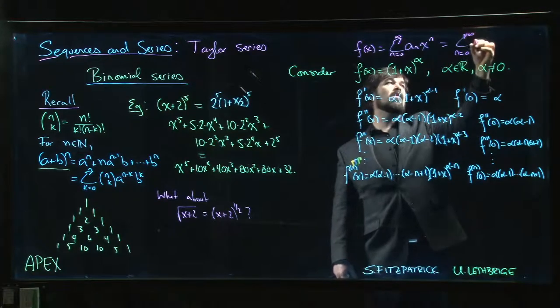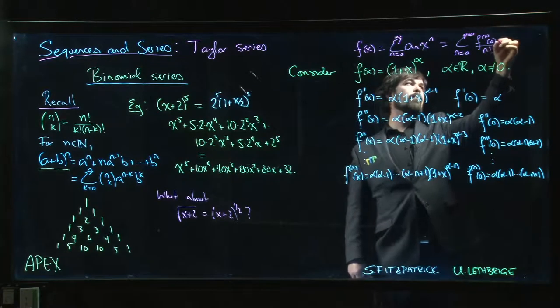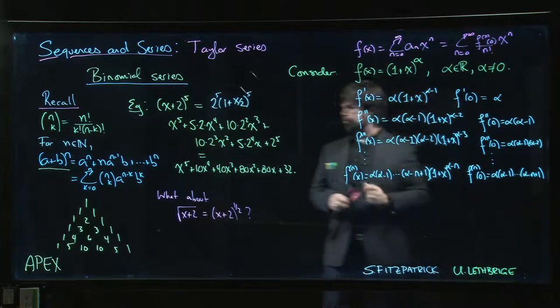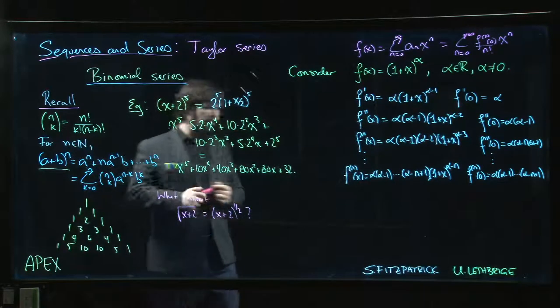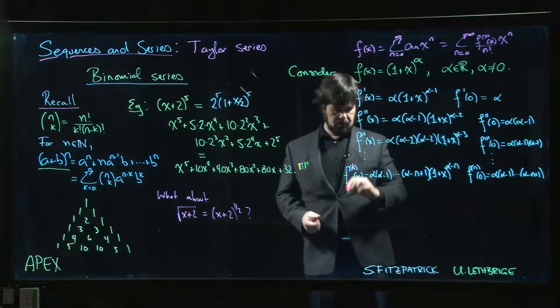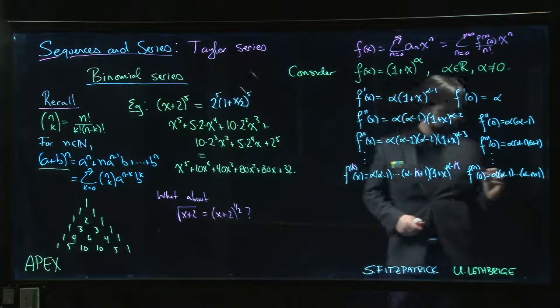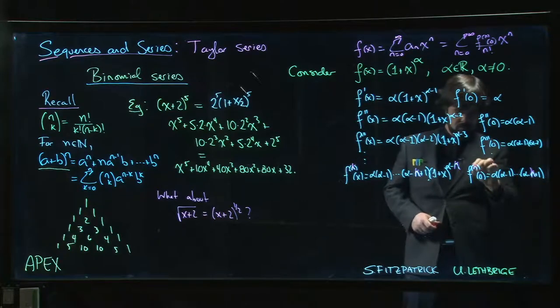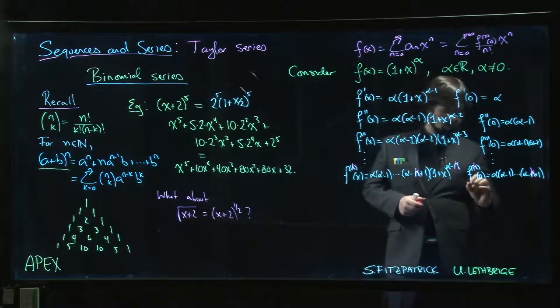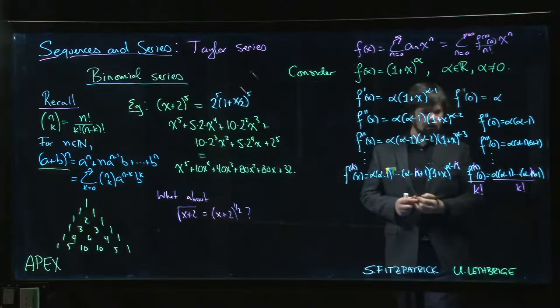Actually, for the sake of comparison with what we have over here, let me use k instead of n just for a moment. So we're going to use k. And so I'll write that as k, and then of course we want the kth derivative, we want to divide by k factorial.